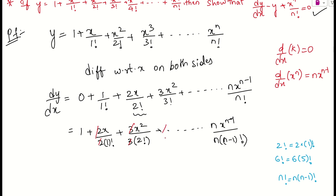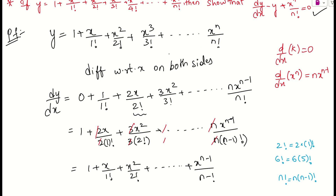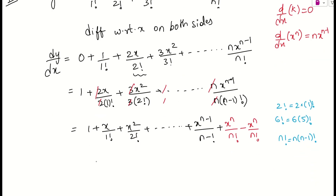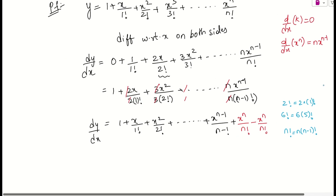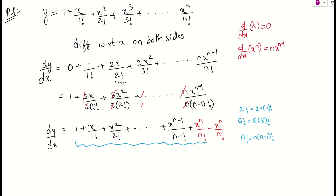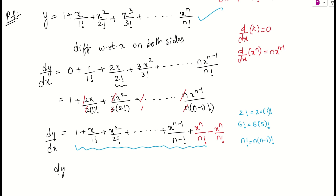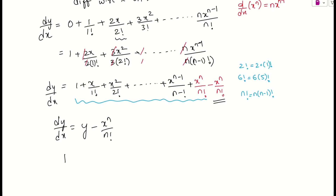After cancellation, what we get is 1 plus x by 1 factorial plus x squared by 2 factorial and so on up to x to the power n minus 1 by (n minus 1) factorial. Now to complete the expression matching our original y, I add and subtract x to the power n by n factorial. The terms from the beginning up to before the last form exactly our y. So dy/dx equals y minus x to the power n by n factorial, which gives dy/dx minus y plus x to the power n by n factorial equals 0 — which is what we needed to prove.